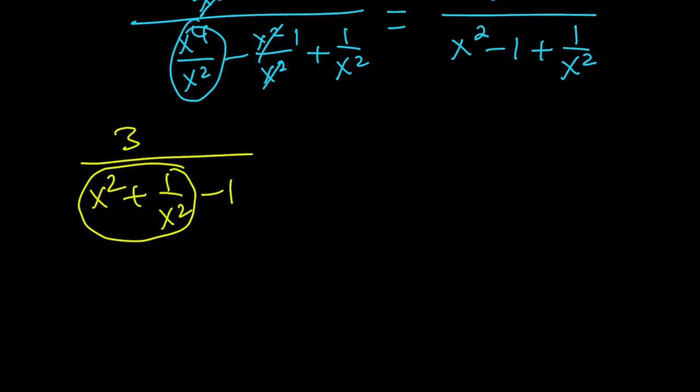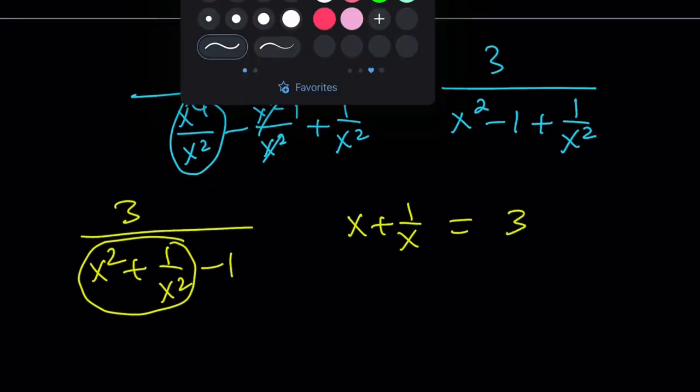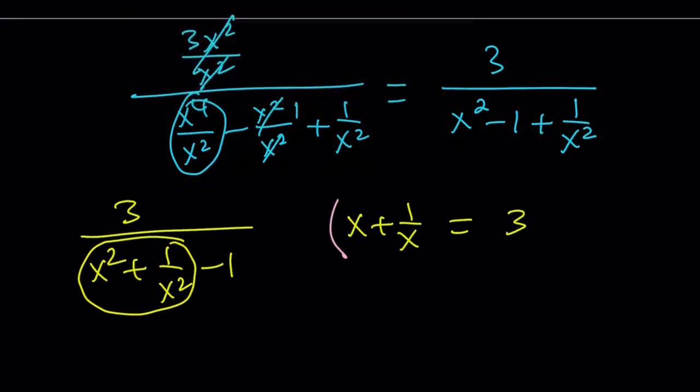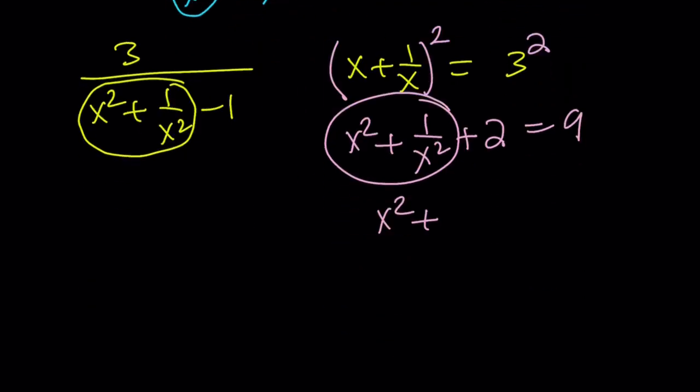Since we know that x plus 1 over x equals 3, it's given in the problem, we can square both sides. That's going to give us x squared plus 1 over x squared - yes, I do the a squared plus b squared first, which is nice - and then plus 2ab, which is 2, equals 9. And guess what? We got the value of x squared plus 1 over x squared. Beautiful. That's going to give us 7.